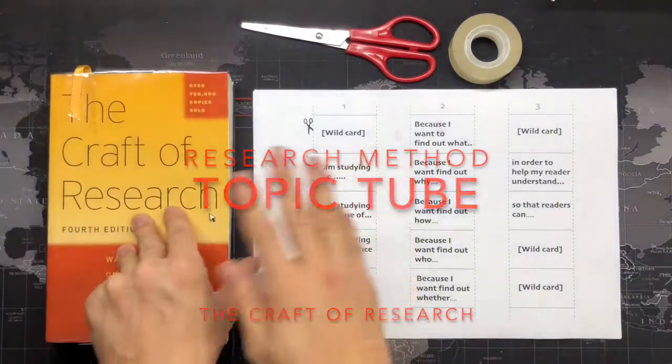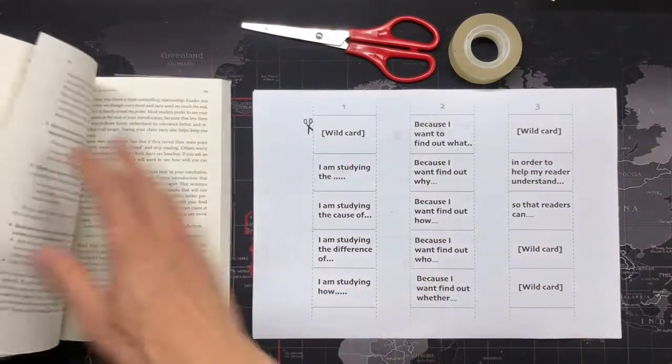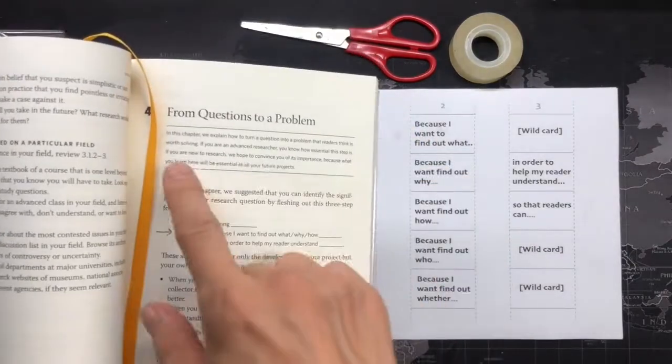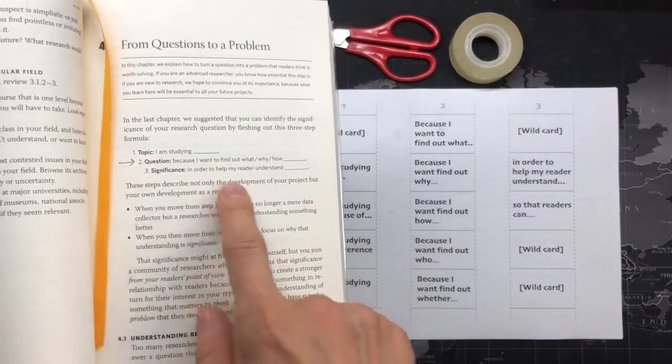I'm going to show you how to make a tool of the question. So I got this one from question to the problem and they have a topic, question, and significance.